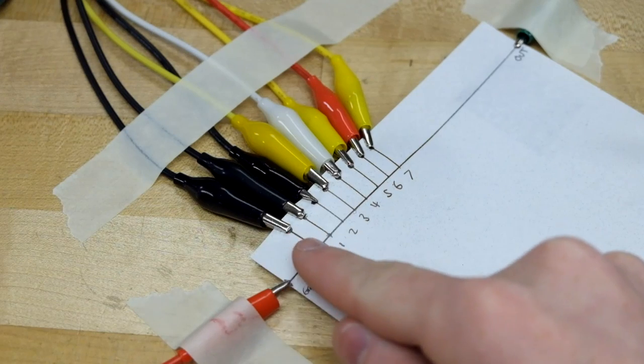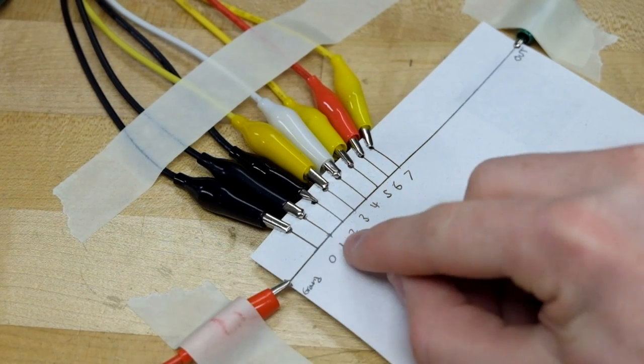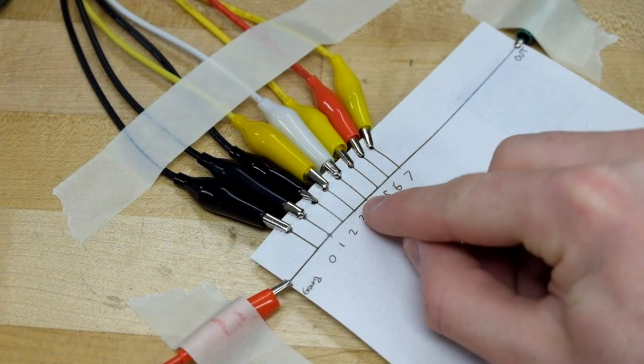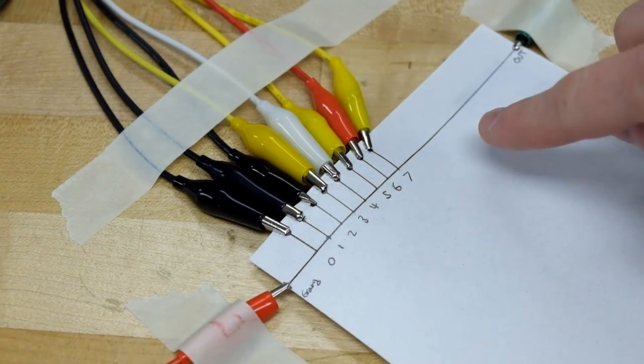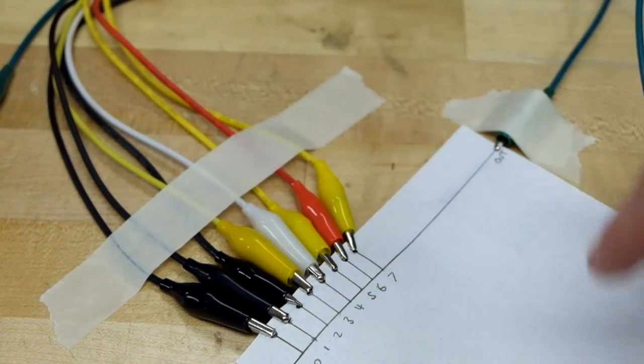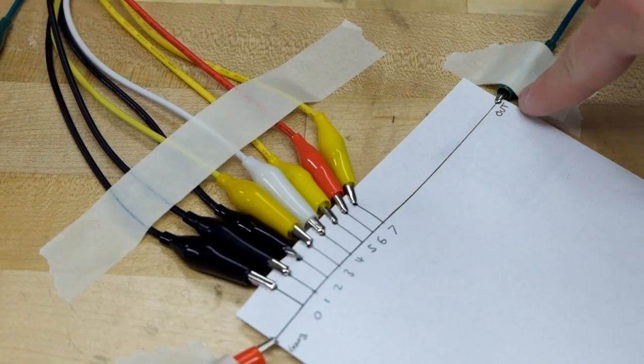So if these traces here that I drew with the pencil are 2k ohms, this is 1k, 1k, 1k, 1k, and this is another 2k right here. And I'm getting the output all the way through the end there. I'll talk about why I'm getting the output down there in a second.